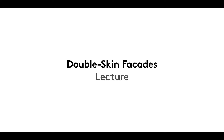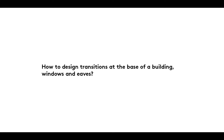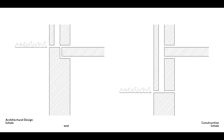A warm welcome to the sixth and last film in our Double Skin Facades series, in which we explain how to go about designing transitions at the base of a building, windows and eaves. Irrespective of the relative heights of the building floor and the surrounding ground, the base of a building is characterised largely by the transition from a single-skin underground wall structure to an overground double-skin wall structure.